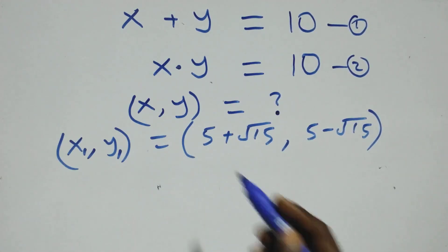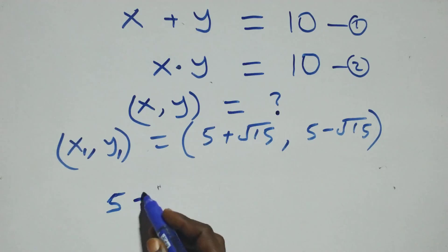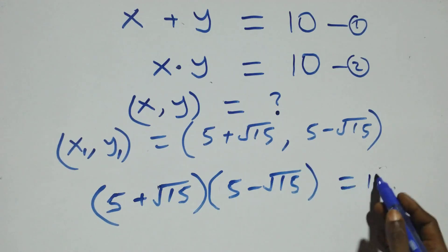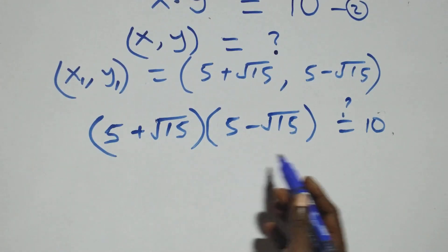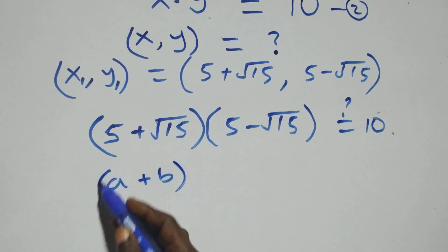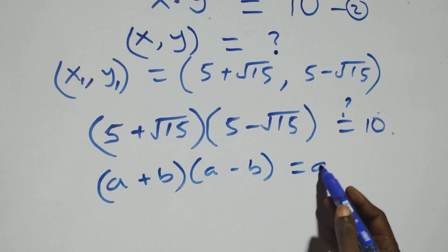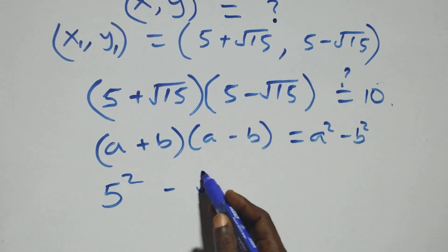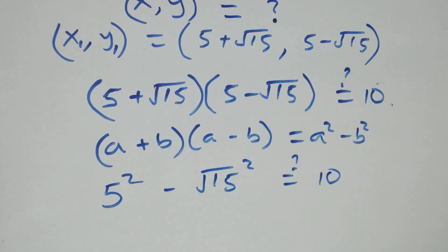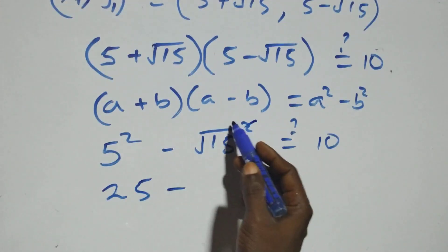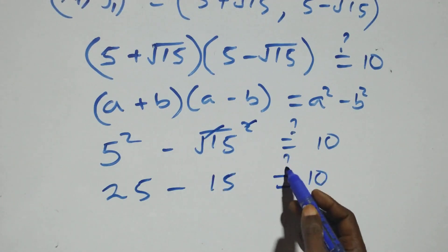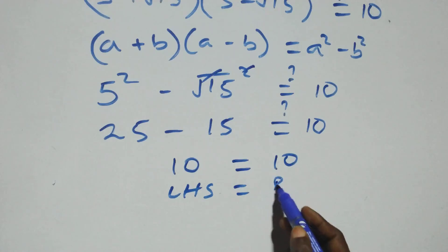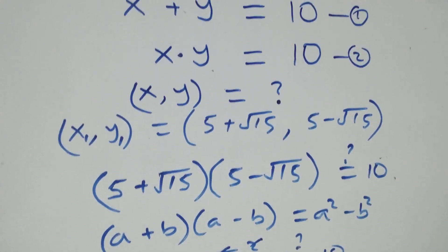For the second equation x times y equals 10: (5 plus root 15) times (5 minus root 15). This follows the identity (a plus b)(a minus b) equals a squared minus b squared. So we get 5 squared minus (root 15) squared, which is 25 minus 15 equals 10. Left hand side equals right hand side, confirming this solution satisfies the second equation.